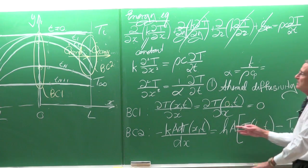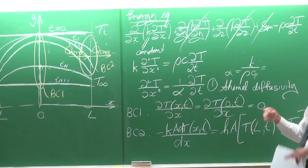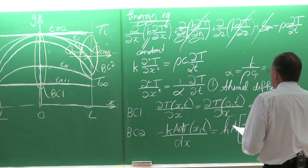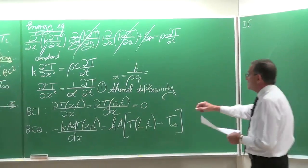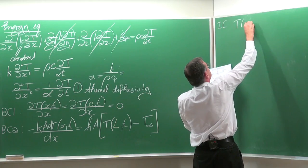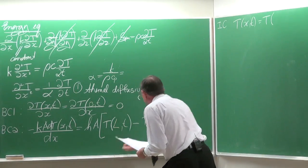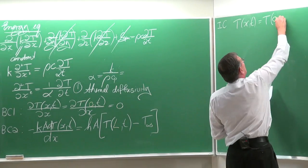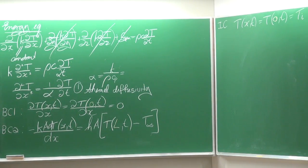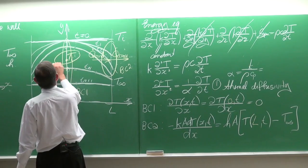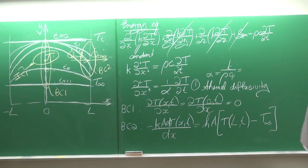Take note that the temperature inside varies as a function of time, so we cannot use Ti — the temperature decreases over time. We also need an initial condition because we have time in equation 1. The initial condition is that the temperature at x equals zero equals Ti. So we have: one partial differential equation, two boundary conditions, and one initial condition.